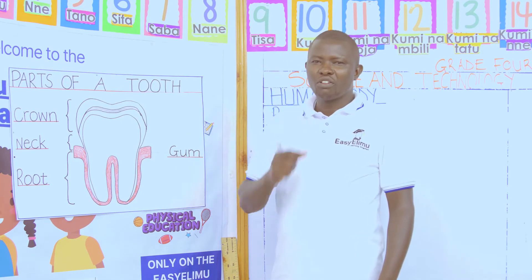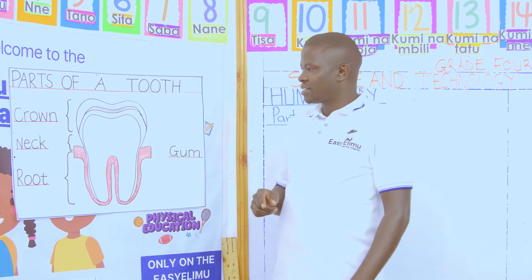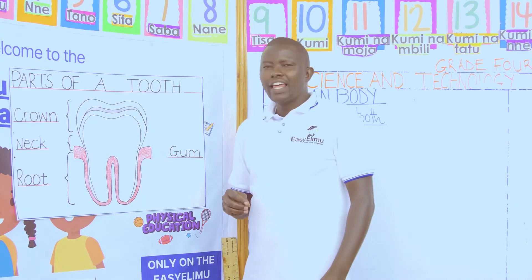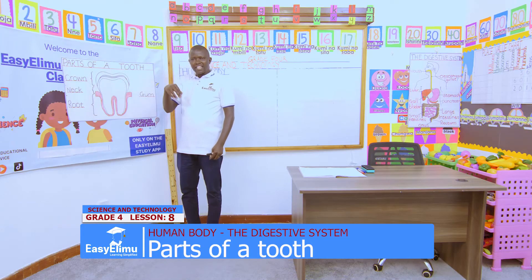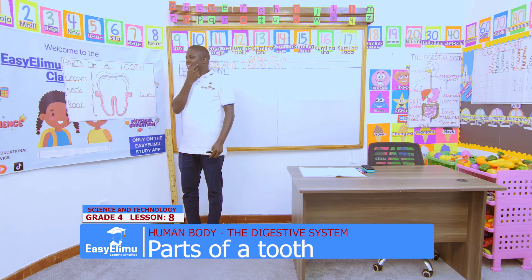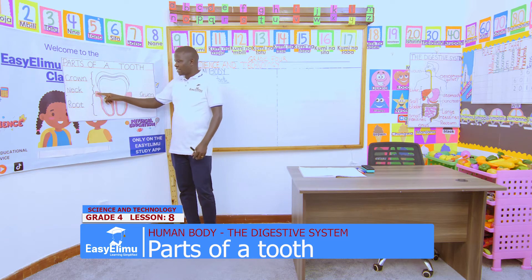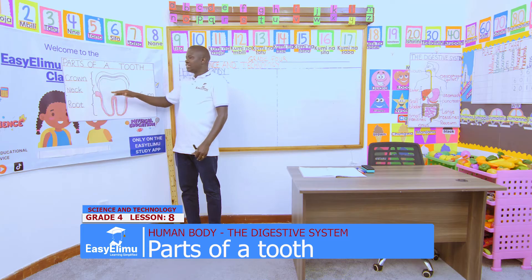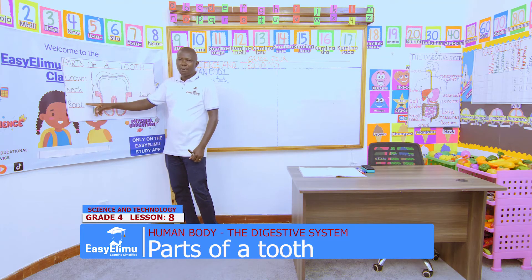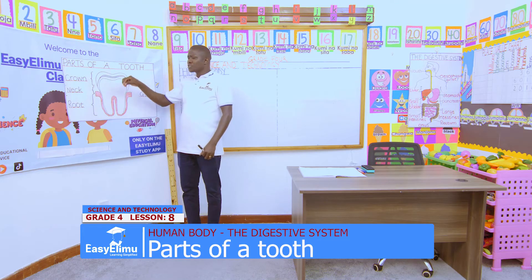We have the crown. Crown is the part that you saw - the white part that you have seen in the mouth of your desk mate. Then there is another part that is inside the gum. The red part is the gum - the red chin is the gum, and it has been indicated here in red color. Inside that gum we have another part we call the root.